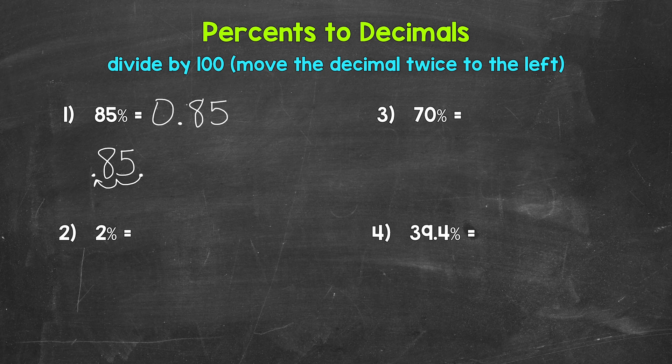Now when I rewrote that decimal, I started with a zero and then the decimal. This is common when writing decimals, because it helps us recognize and see the decimal. We don't want the decimal to get overlooked.